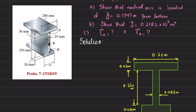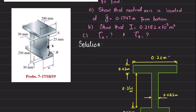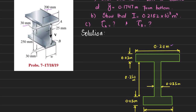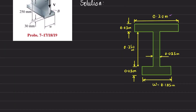The cross section of the beam has been drawn with all dimensions converted to meters. First, we will find the location of the neutral axis from the bottom. ȳ = Σ(ȳᵢ · Aᵢ) / ΣAᵢ. We designate the three sections as 1, 2, and 3.